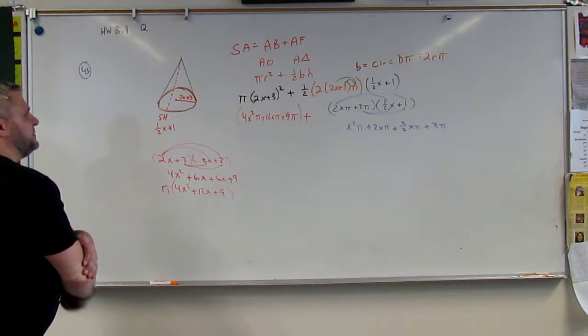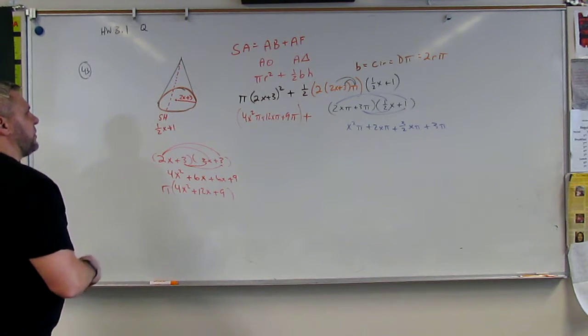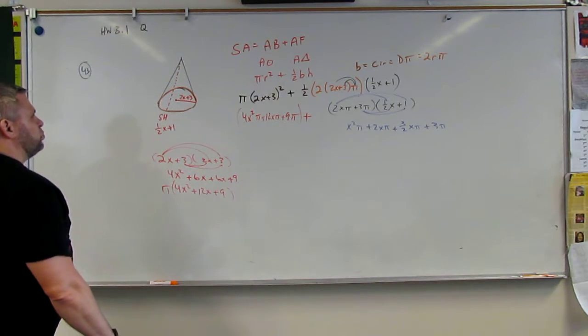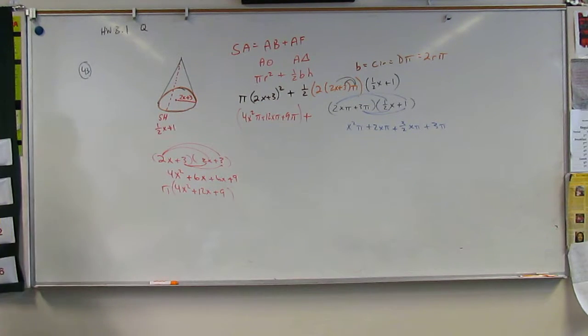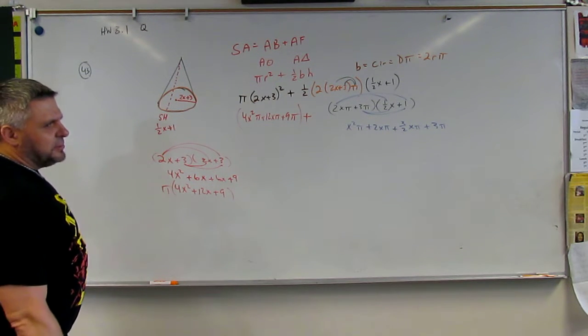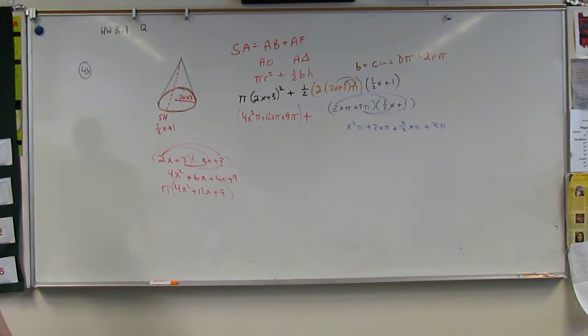And then times the slant height, which is 1 half x plus 1. I think we forgot this half the last time, didn't we? It wasn't the last time. Because we didn't have the 3 halves pi, did we? I don't remember that being there.